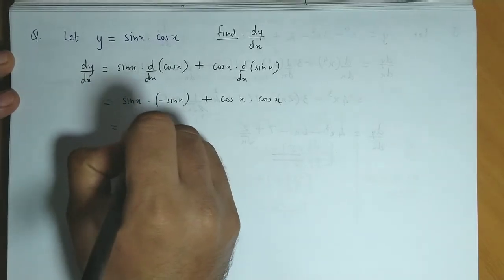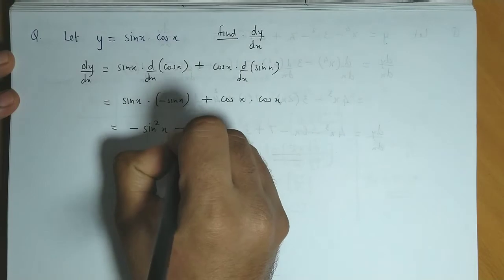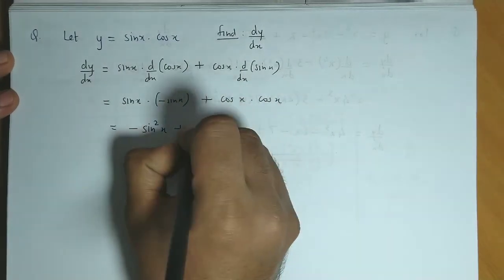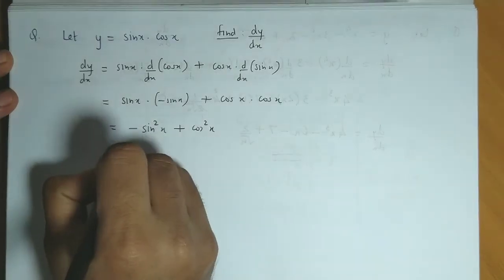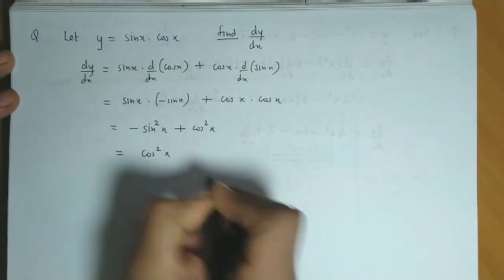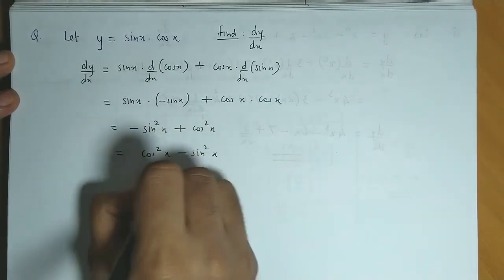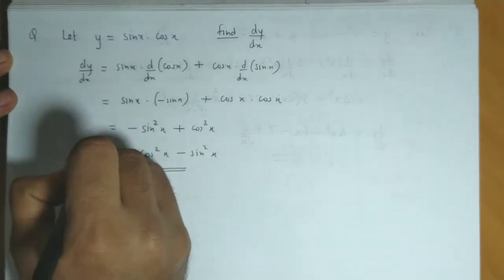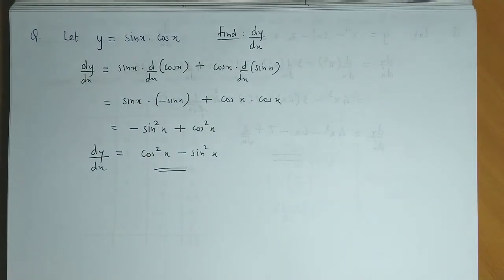Sin x times minus sin x is minus sin squared x, plus cos x times cos x is cos squared x. This can be rearranged and written as cos squared x minus sin squared x. This is the required value for dy/dx.